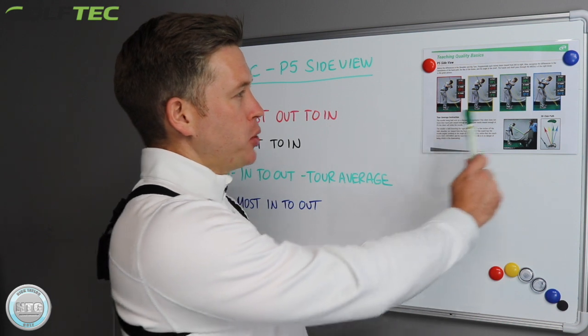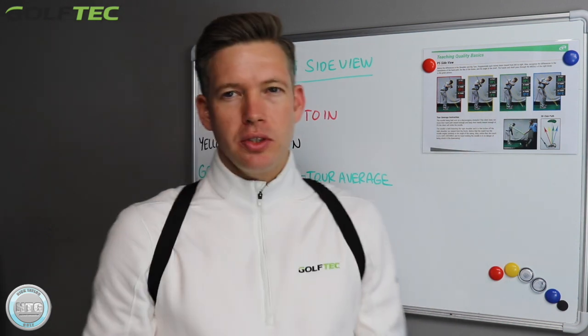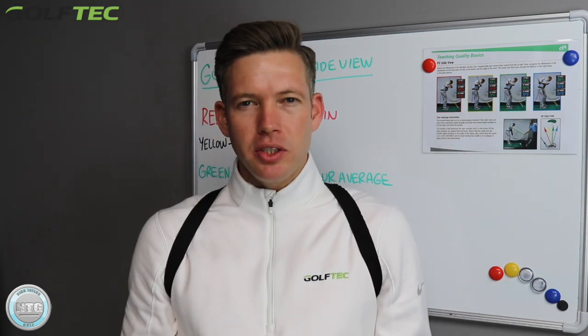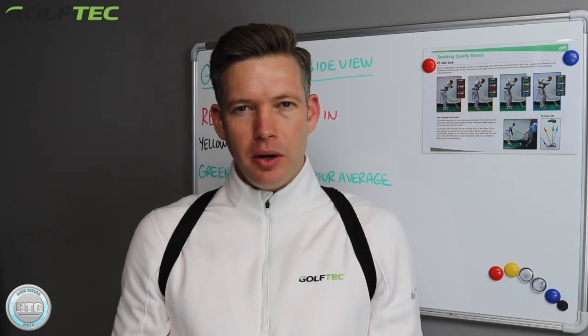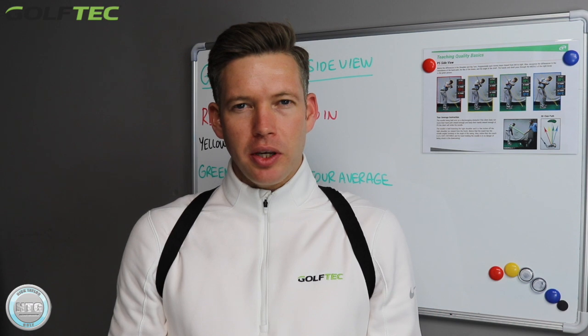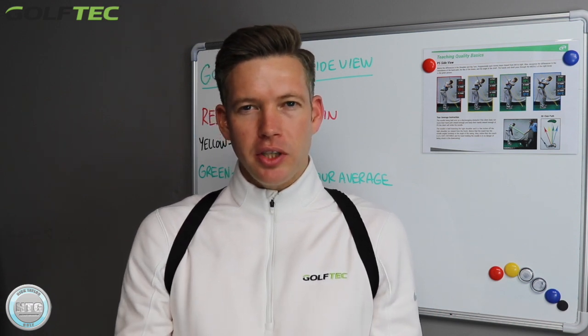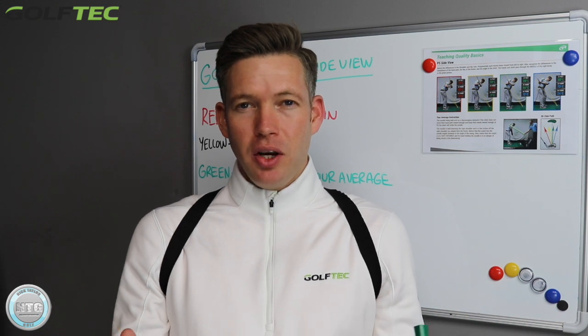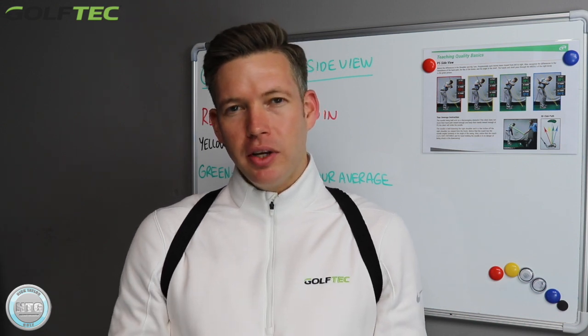Behind me here we have a spectrum of positions. We're looking at P5 today, which is left arm parallel in the downswing. I'm going to show you how we use a color code system here at Golf Tech to measure these positions and predict what sort of club path that golfer is going to have.